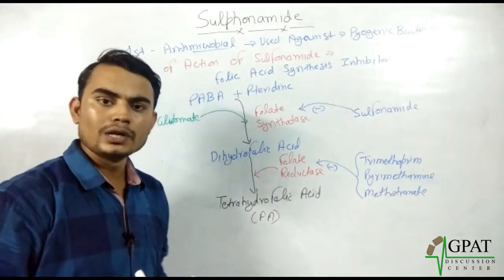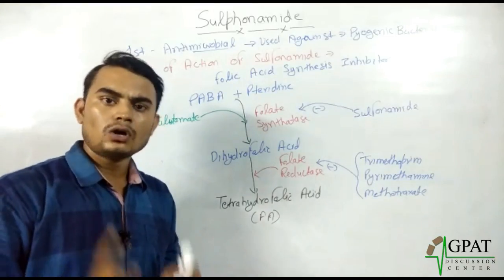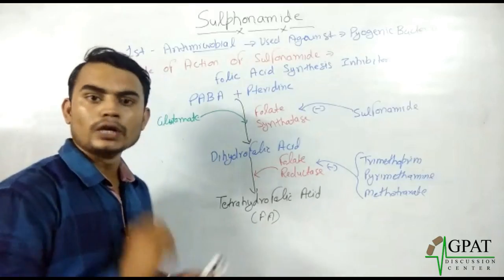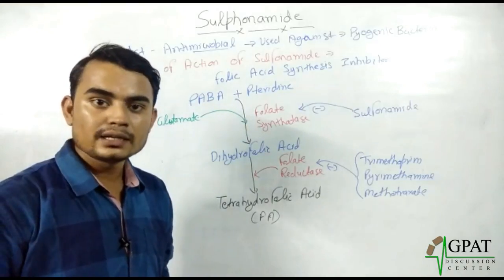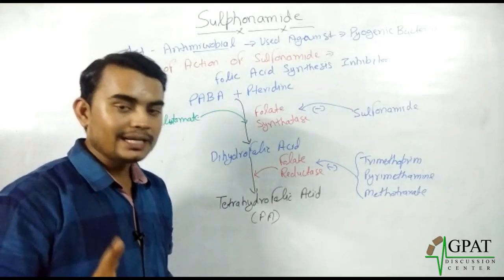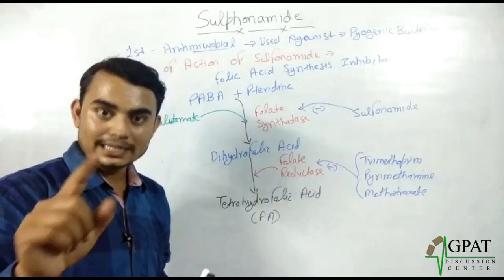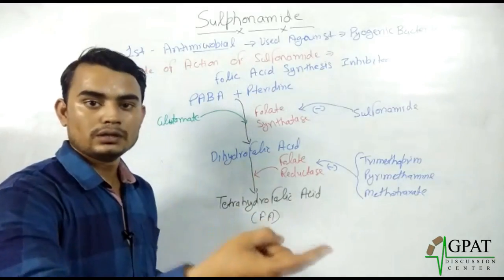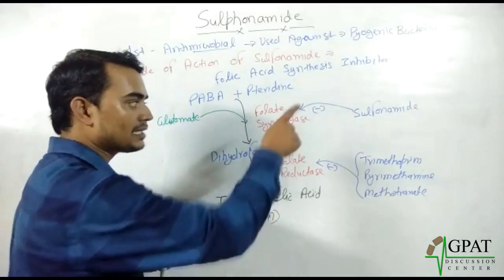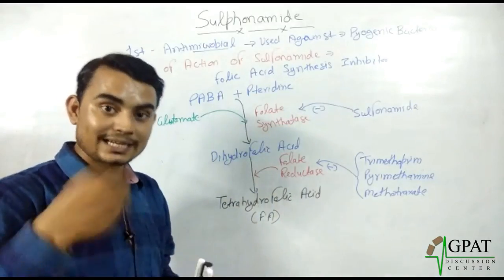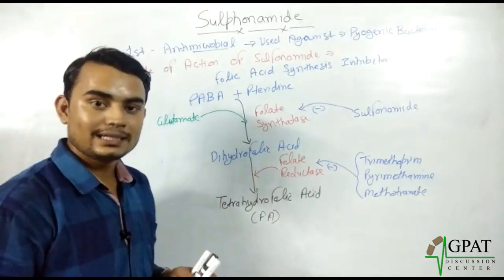A common question arises: humans also use folic acid, so does sulfonamide inhibit human folic acid synthesis? The answer is no. Humans cannot synthesize folic acid; we take it directly from food. That is why sulfonamide does not inhibit folic acid synthesis in our body.